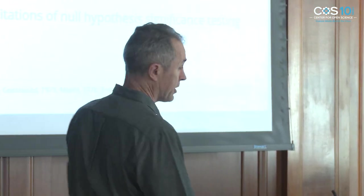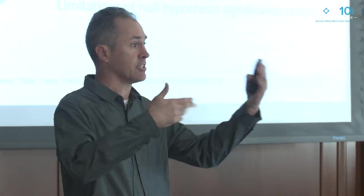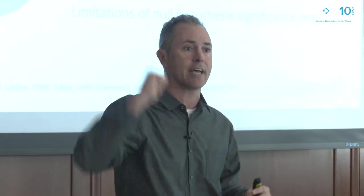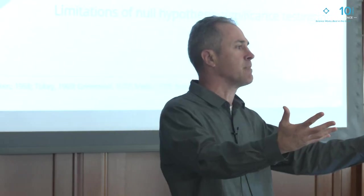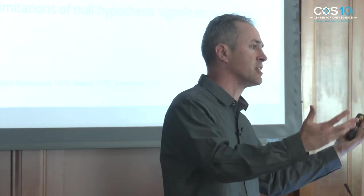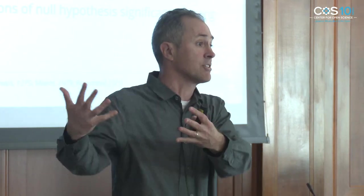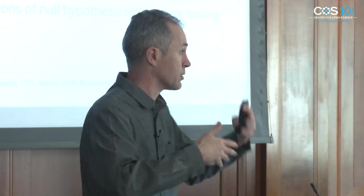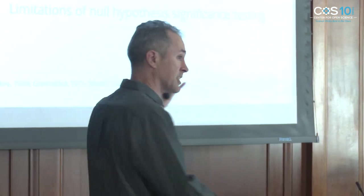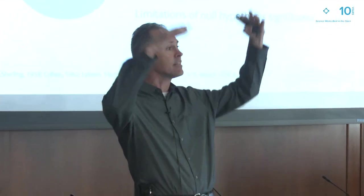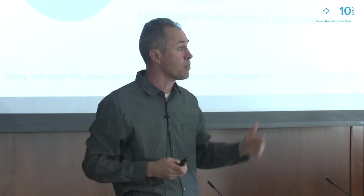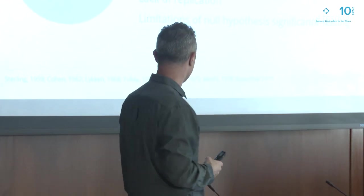People are employing questionable research practices. They're making changes to their analytic strategy as they go, and that's inflating the likelihood of false positives. They're not applying rigor. They're using measures that have already been invalidated, not validating their existing antibodies. There's publication bias — we're ignoring the negative results and inflating the likelihood of observing findings by selectively reporting what gets into the literature.